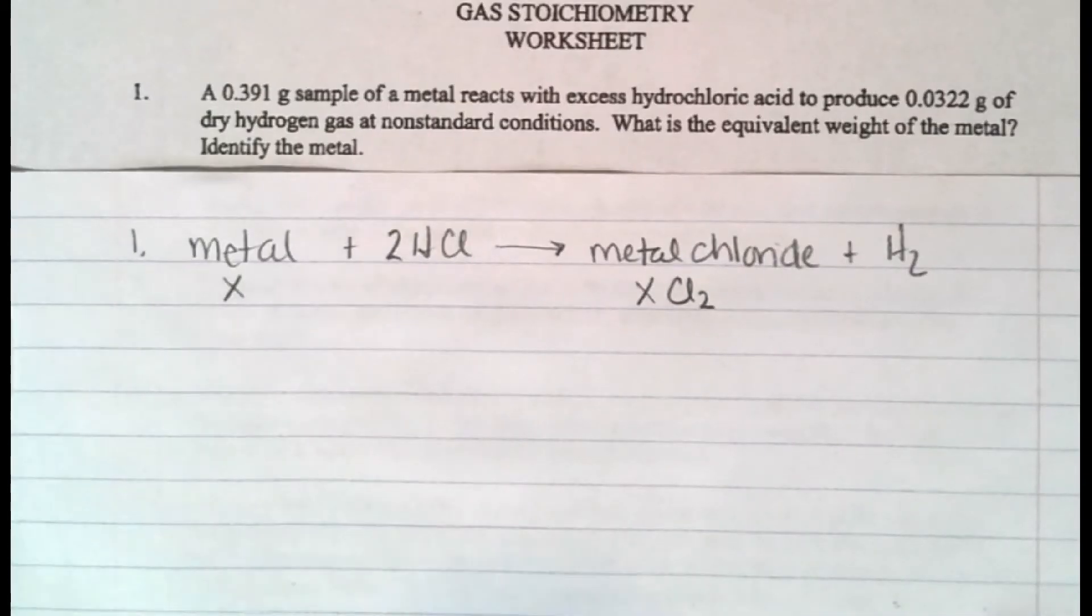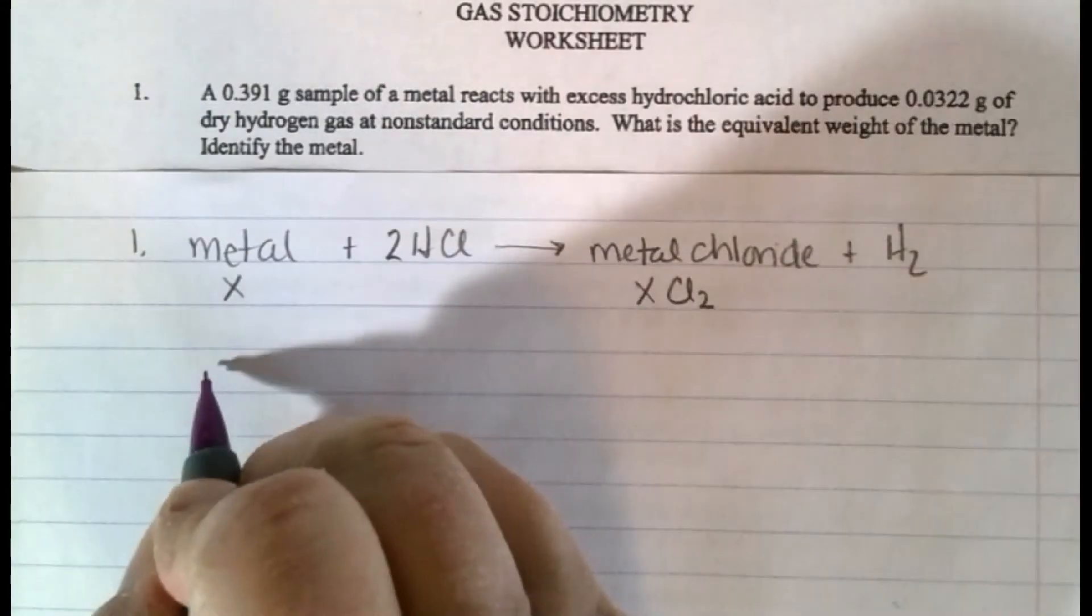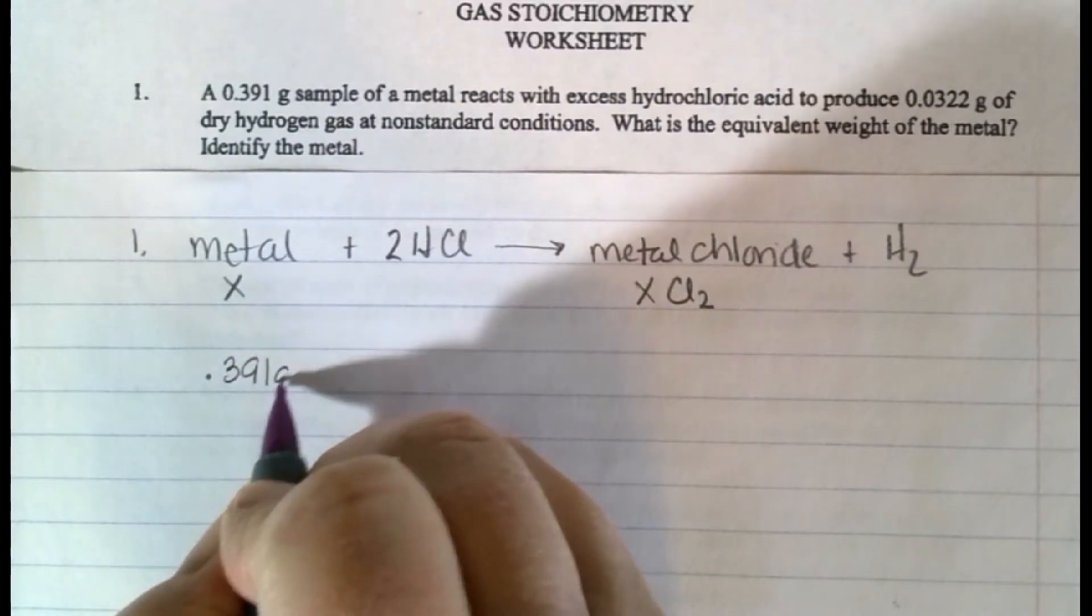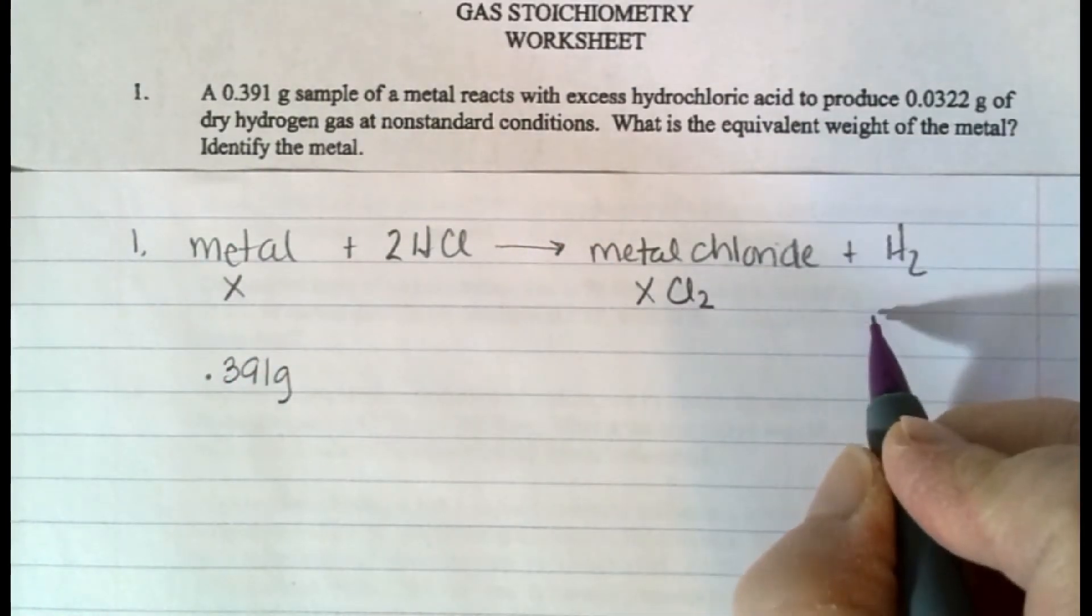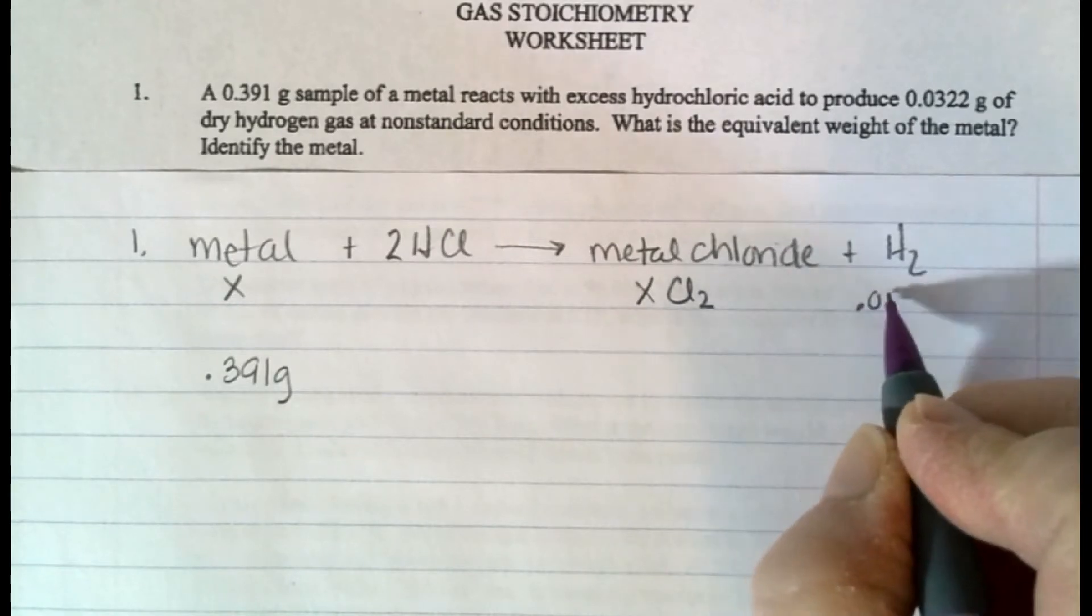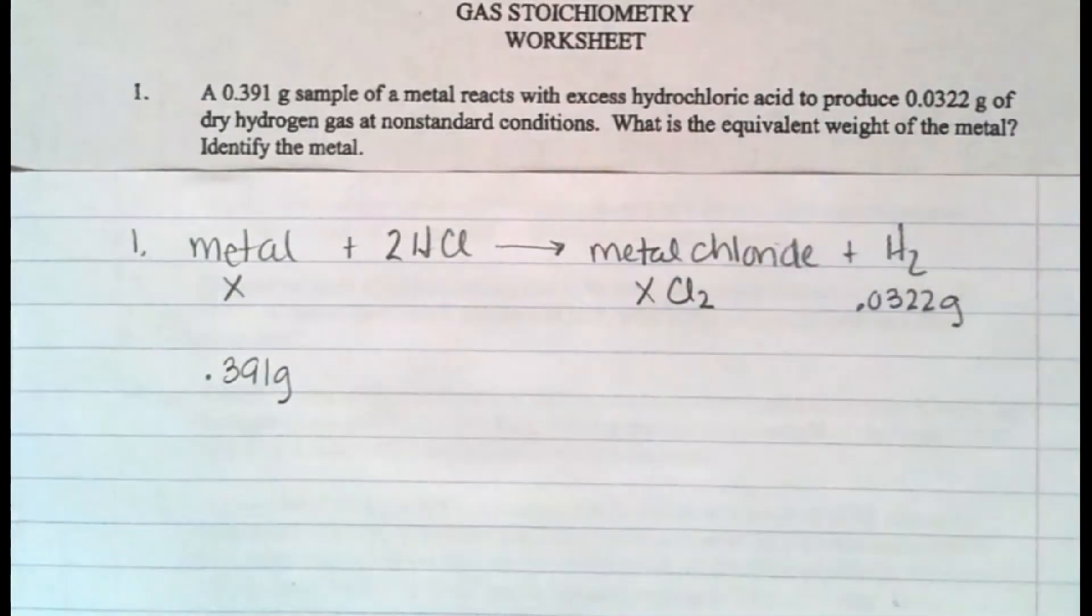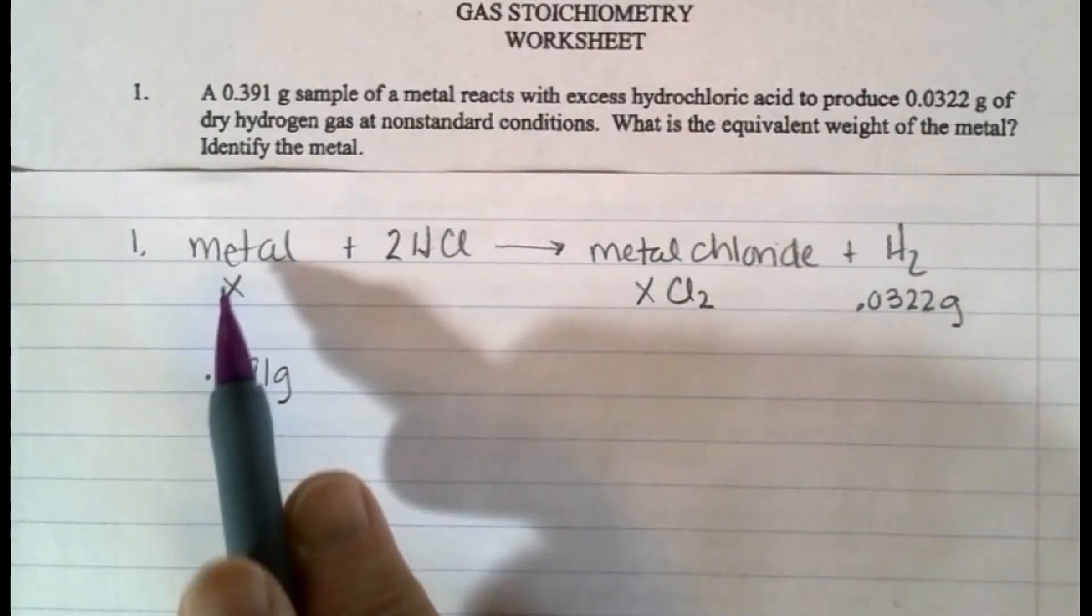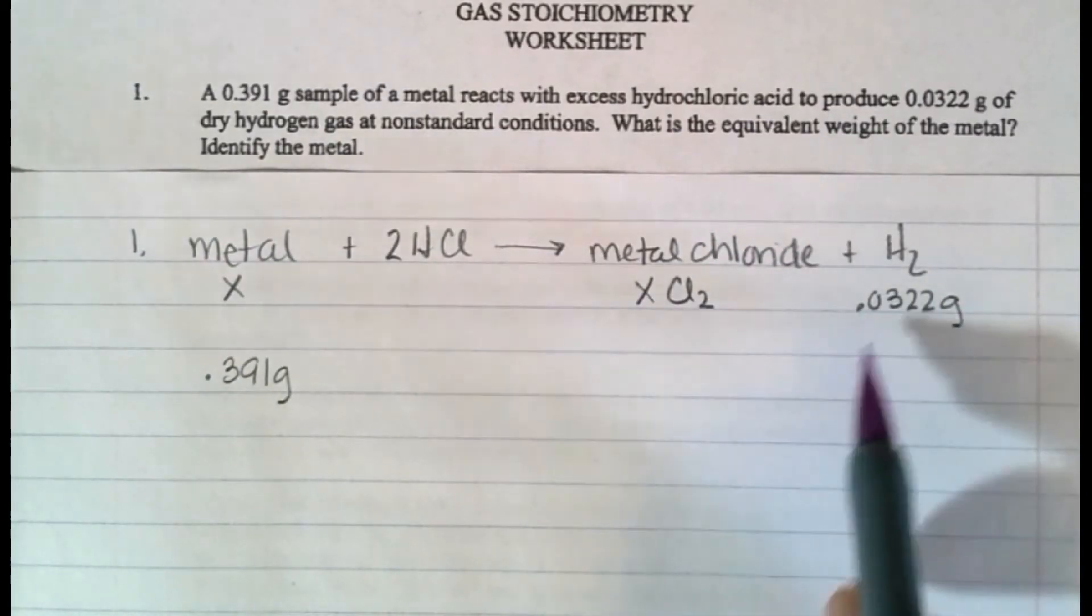The only thing I know is that when I have grams, if I have, they say I have 0.391 grams of this metal, and I have the dry hydrogen, which is nice because that means I don't have to correct it or anything, grams of this. The only thing I know is how to compare the moles, not the grams of the substance.